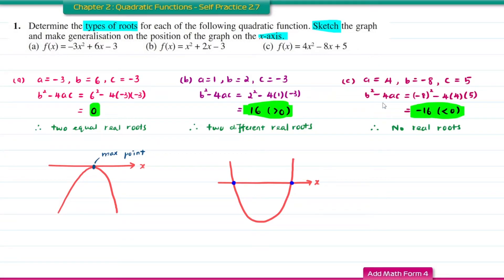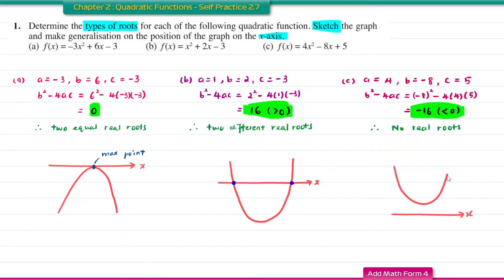When you sketch the graph on the x-axis, since A is greater than 0, the graph — which is in the shape of a parabola — will not intersect the x-axis. The graph will be above the x-axis.